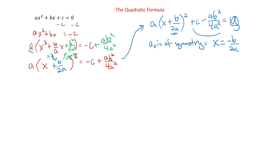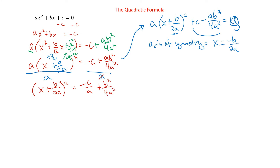Next we can square root both sides — that's another topic from one of those previous sections. We have something squared equals something, so we can square root both sides. But when we do, we get plus or minus, because it doesn't matter if it's positive or negative — when we square it we get that positive number, so we have to include both. So x plus b over 2a equals plus or minus the square root, and we're going to combine these fractions.